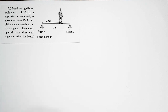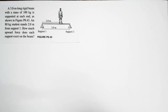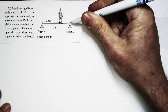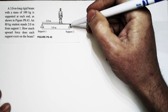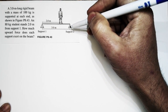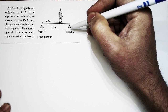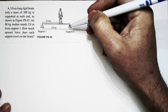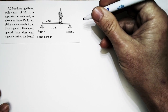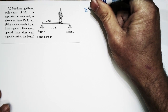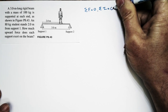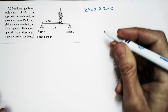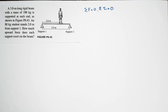This is a classic static equilibrium problem. The first step is to identify the object of interest, which is the beam. The beam is the distributed element that has forces applied to it at different places. Since it's a static equilibrium problem, we use the fact that the sum of the forces equals zero and the sum of the torques equals zero. We'll look at the forces and torques on the beam.